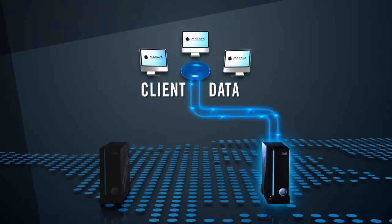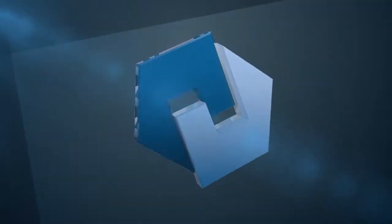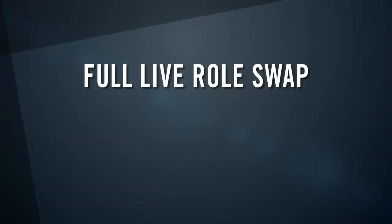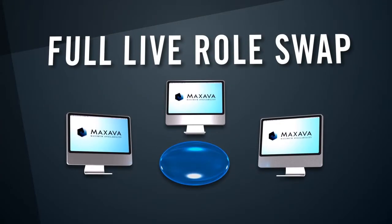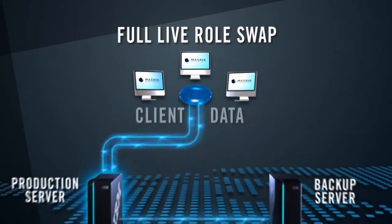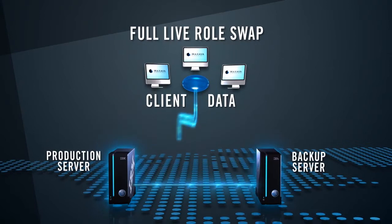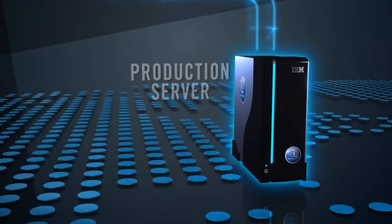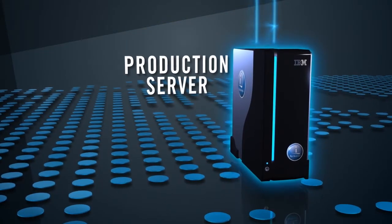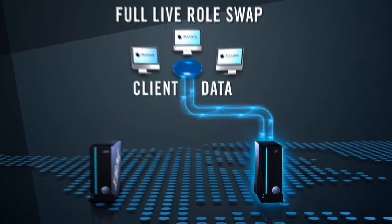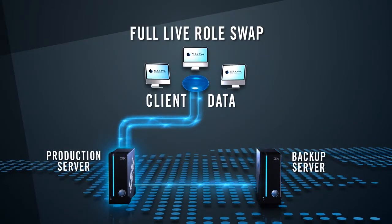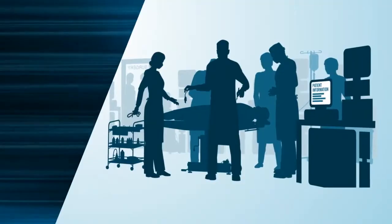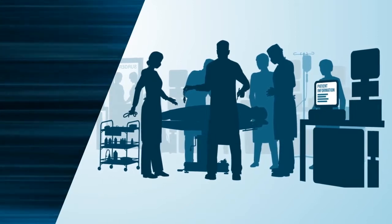A Maxava role swap can be run in two ways: full live or simulated. In a full live role swap, users swap from the production machine to the backup machine — the backup machine becomes the production machine. Users are swapped back after testing or maintenance is completed.